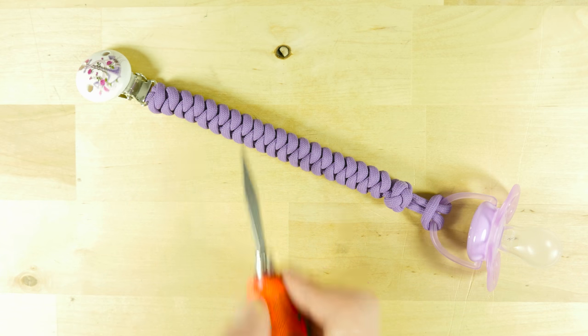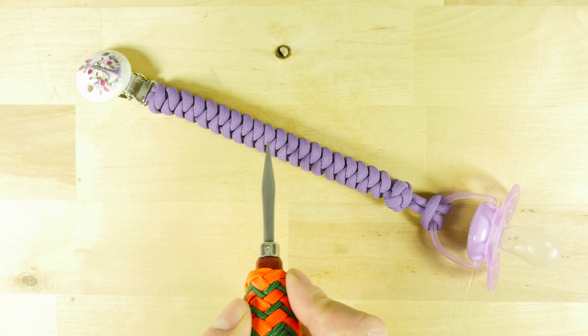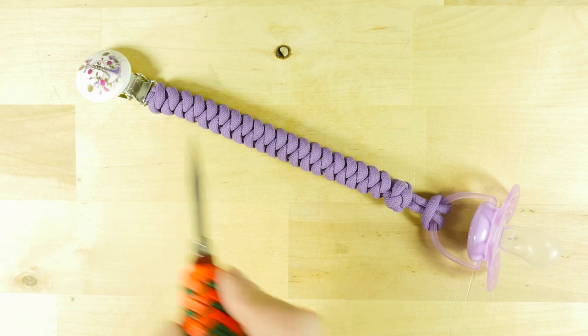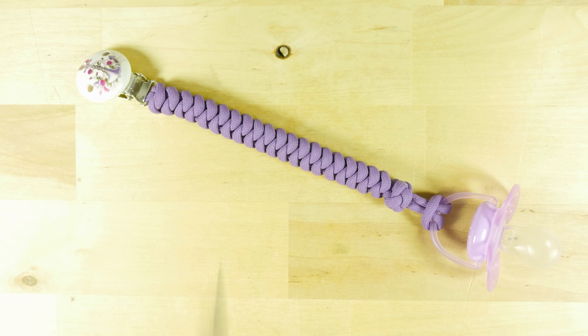If you want a longer one, you're simply going to use more paracord, and if you want a shorter one, use less paracord.